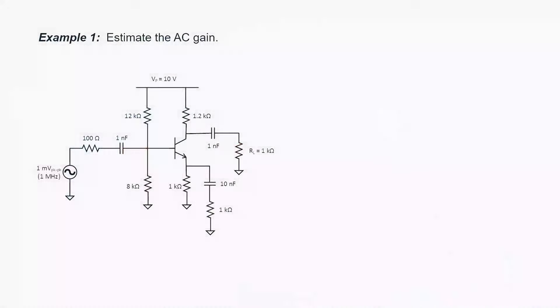Let's work a few example problems related to the common emitter configuration. In the first problem, we're going to estimate the AC gain. We can learn a lot just by inspection.